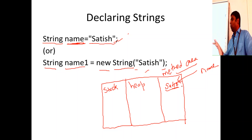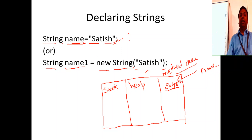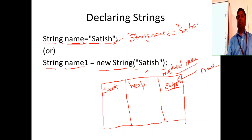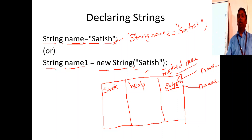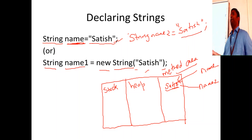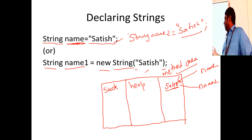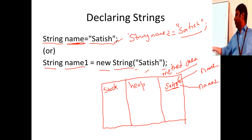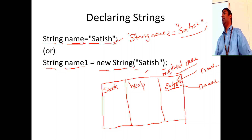The method area is used for storing code metadata for classes, objects, static constants, and variables. If you declare another string `String name2 = "Satish"`, it does not create another "Satish" in memory. It just creates one more reference pointing to the same address, because "Satish" was already in the string constant pool. Every time you declare a new variable, the JVM first searches the pool to check if that value already exists.